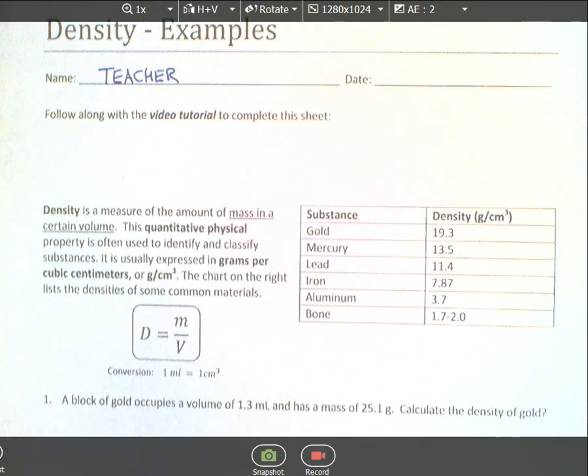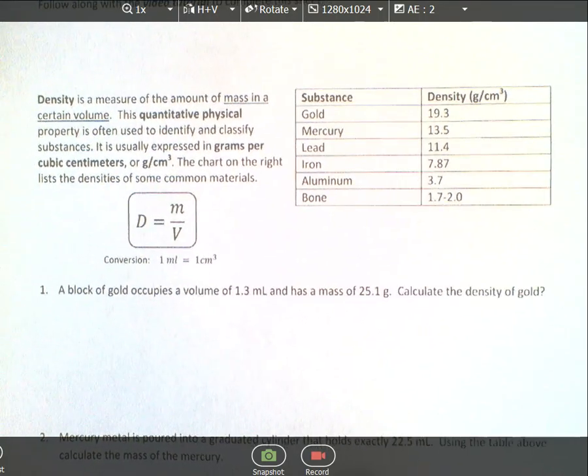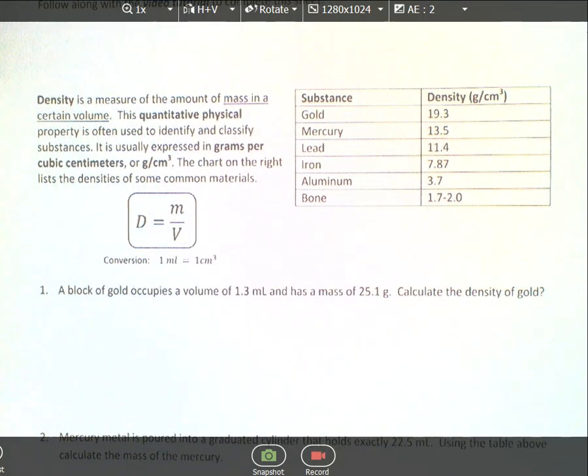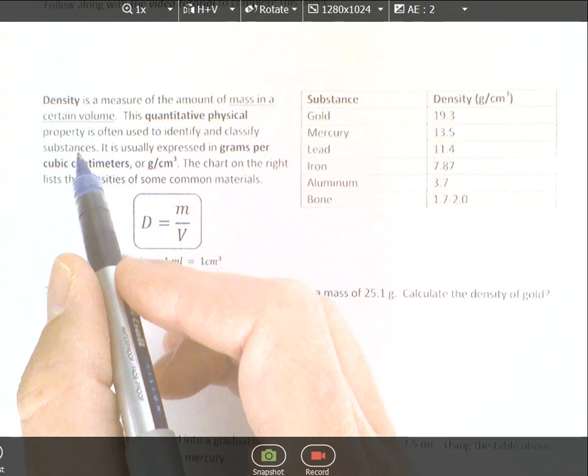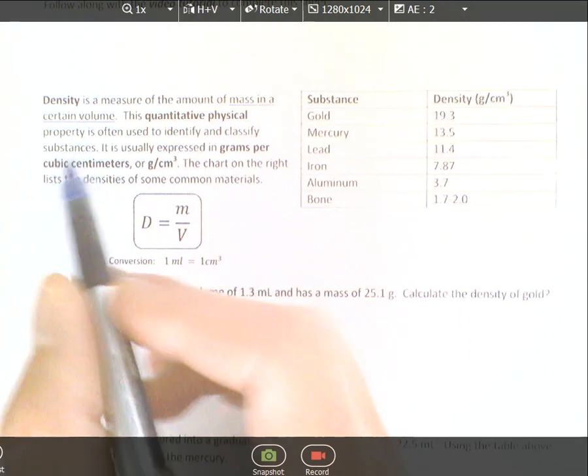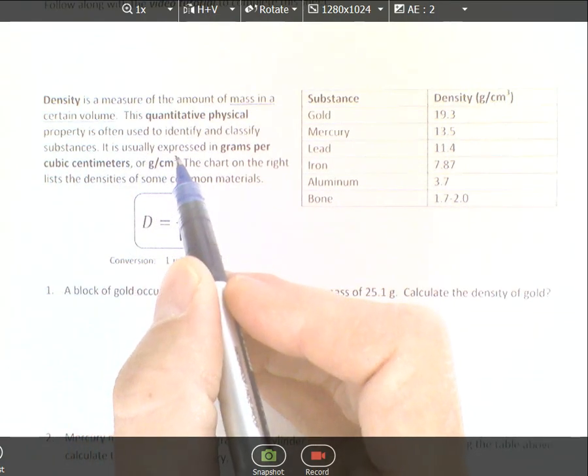Density is a measure of the amount of mass within a given volume. This is a quantitative physical property often used to identify and classify substances, making it a good forensics tool. Engineers use it as well.